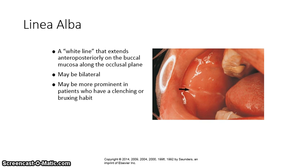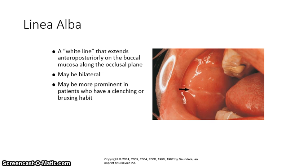Linea alba literally means 'white line.' It is a white line that extends anteroposteriorly on the buccal mucosa along the occlusal plane. It may be unilateral, bilateral, or confined to the posterior or anterior portion of the mouth. It may be more prominent in patients who have a clenching or bruxing habit. If you see what appears to be a linea alba, stretch the cheek slightly — if the line disappears, it is usually something else or an early linea alba.